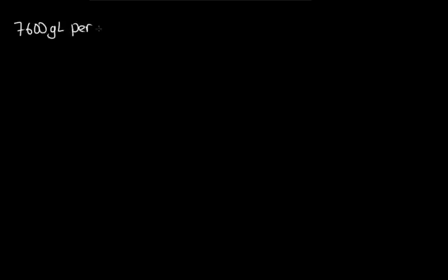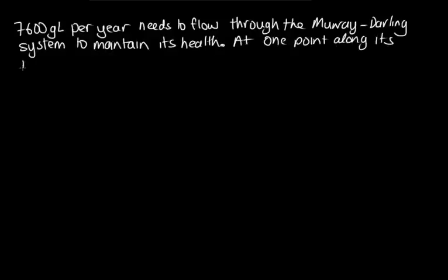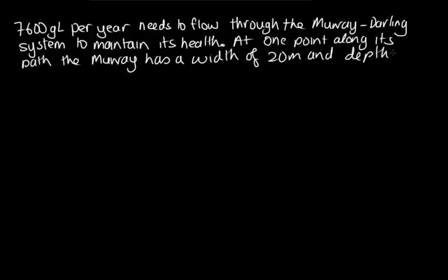Let's solve a problem using this equation now. 7,600 gigalitres per year needs to flow through the Murray-Darling system to maintain its health. At one point along its path, the Murray has a width of 20 metres and a depth of 5 metres.